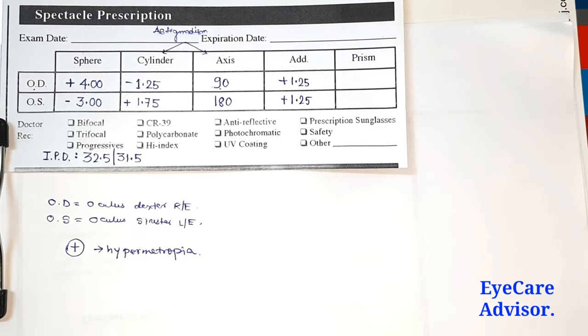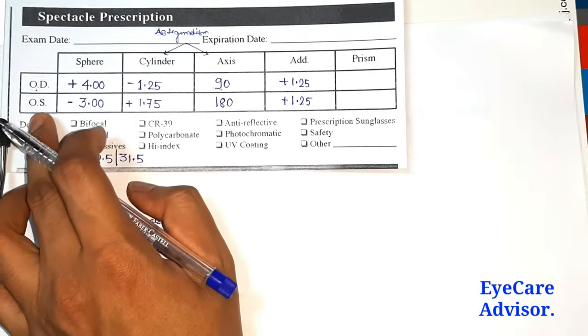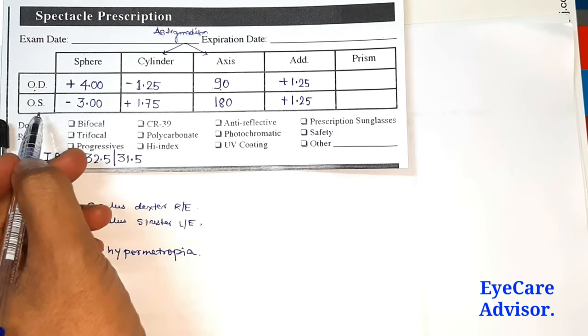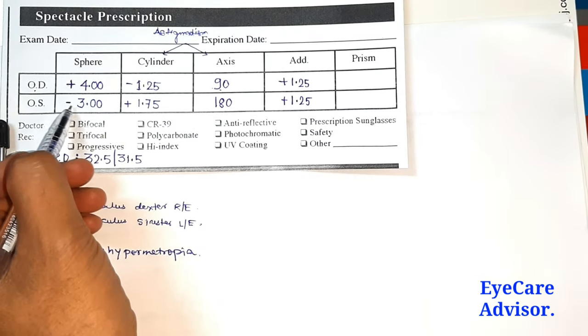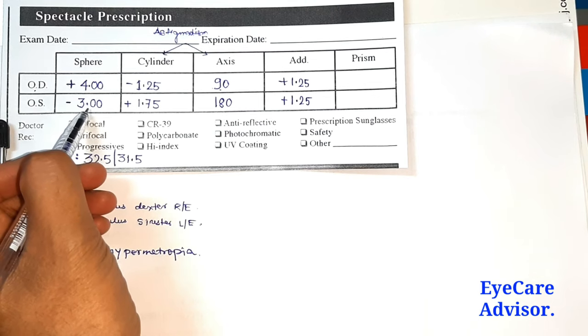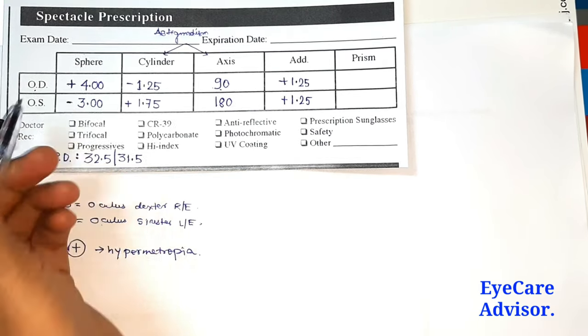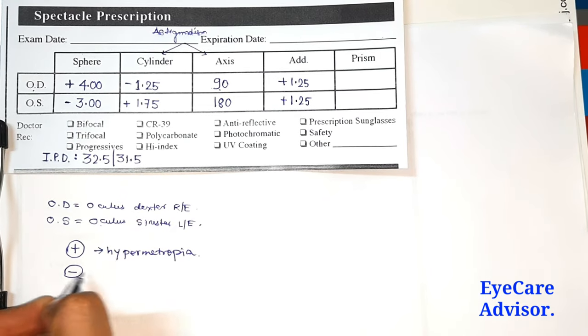Now we will go to the left eye, OS, as I mentioned already, oculus sinister, that is the left eye. If you see the left eye prescription here, it's written minus 3. So what does this minus sign denote? If it is minus, it means myopia.